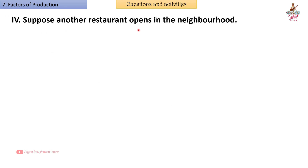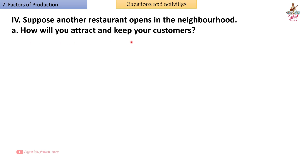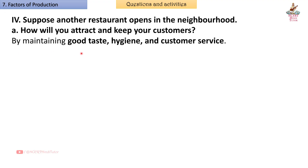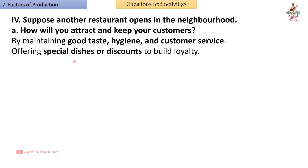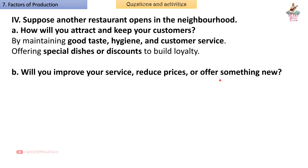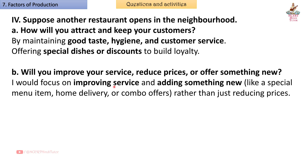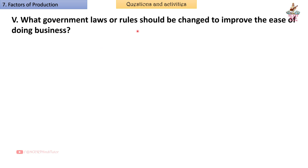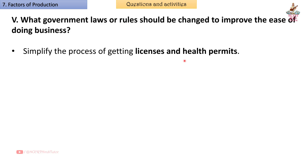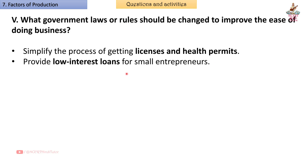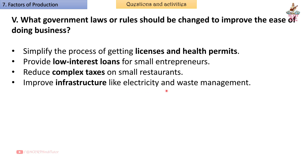Fourth, if another restaurant opens in the neighborhood: How will you attract and keep your customers? Answer: By maintaining good food taste, hygiene, and customer service, and offering special dishes or discounts to build loyalty. Will you improve your service, reduce prices, or offer something new? Answer: I would focus on improving service and adding something new — like a special menu item, home delivery, or combo offers — rather than just reducing prices. Fifth, what government laws or rules should be changed to improve the ease of doing business? Answer: Simplify the process of getting licenses and health permits, provide low-interest loans for small entrepreneurs, reduce complex taxes on small restaurants, and improve infrastructure like electricity and waste management.